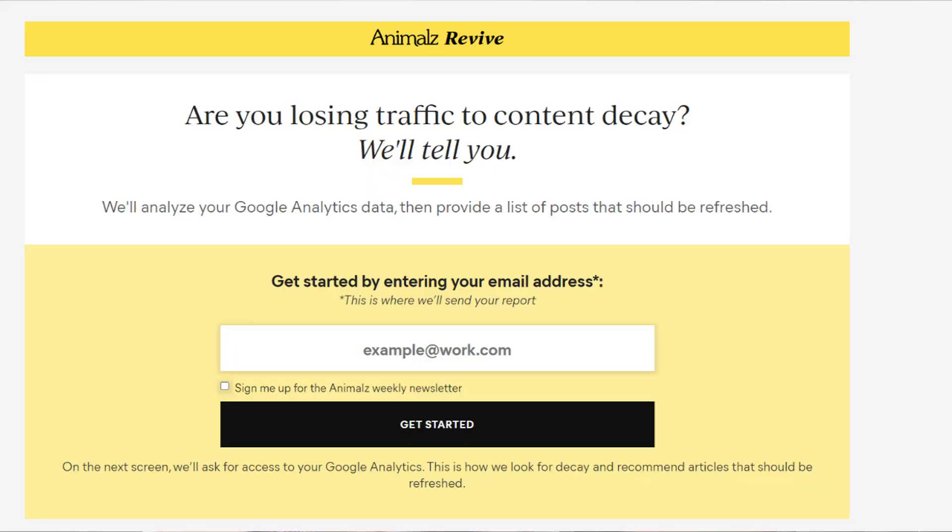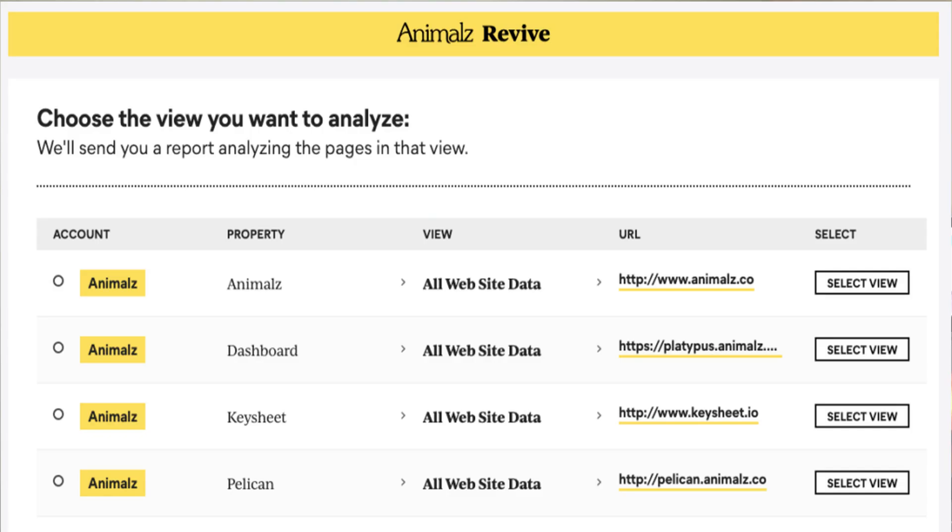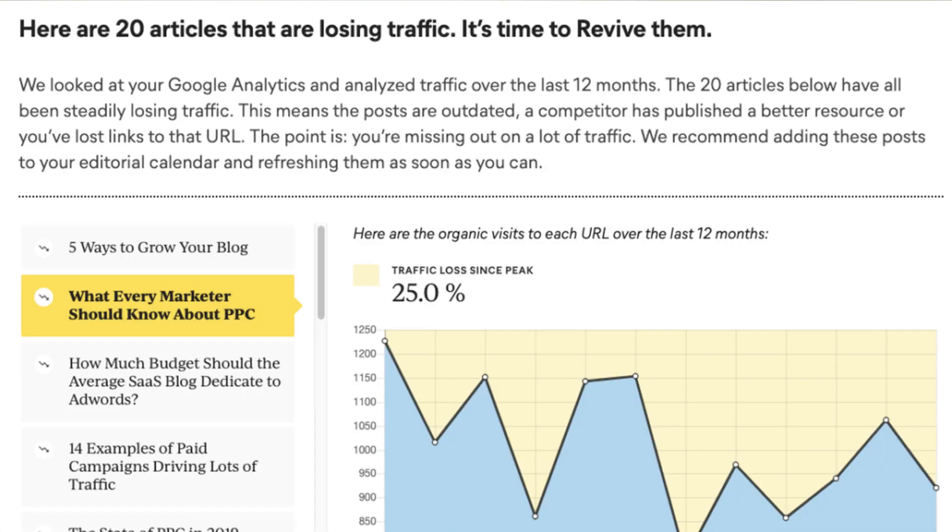which is Animals Revive tool. Now this analyzes your Google Analytics data and then tells you which of your posts have been losing organic traffic so that you can give those an update. So this is really helpful because now you don't have to manually dig through your Google Analytics data to try and figure this out.